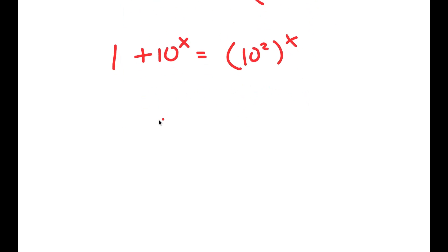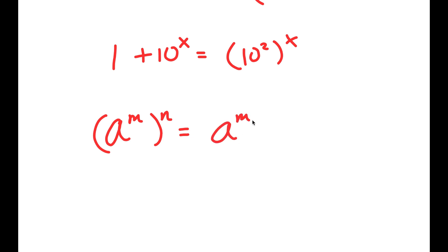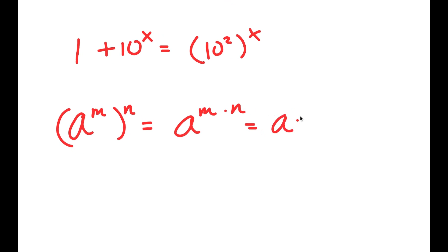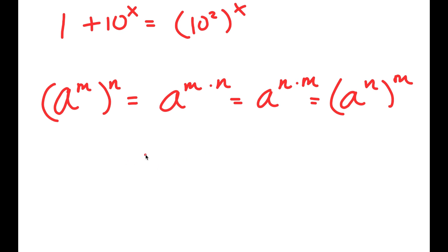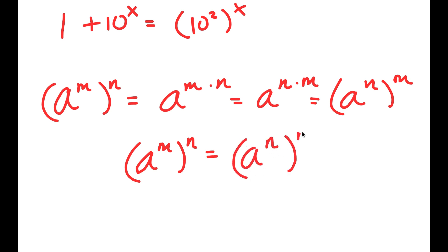From here, if I have something in the form a to the power of m to the power of n, this is equal to a to the power of m times n. And since a to the power of m times n is the same as a to the power of n times m, this means that a to the power of m to the power of n is equal to a to the power of n to the power of m.